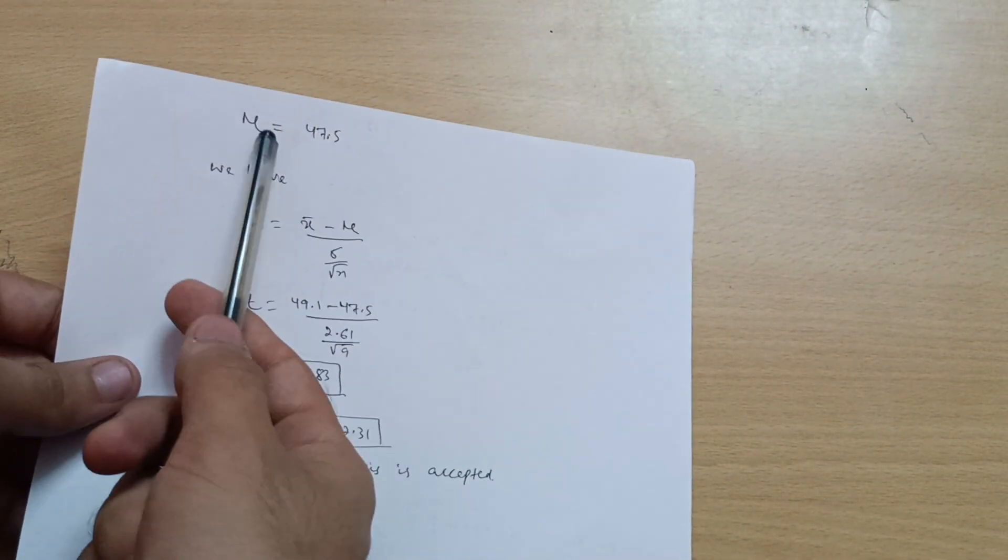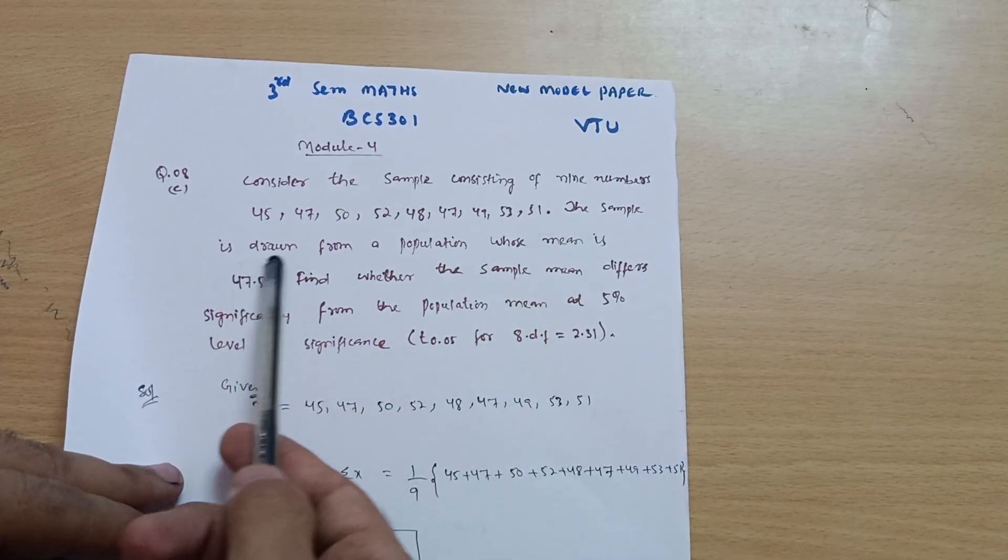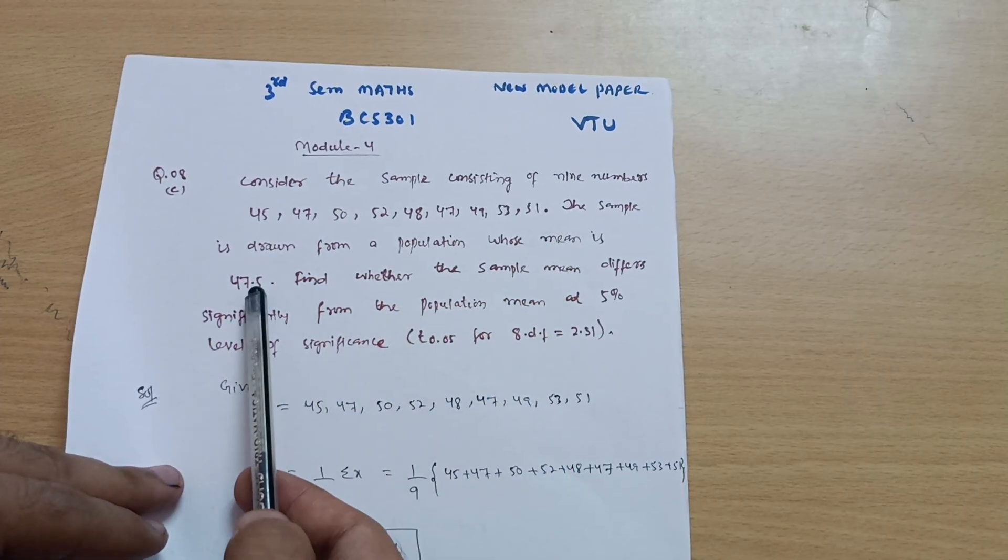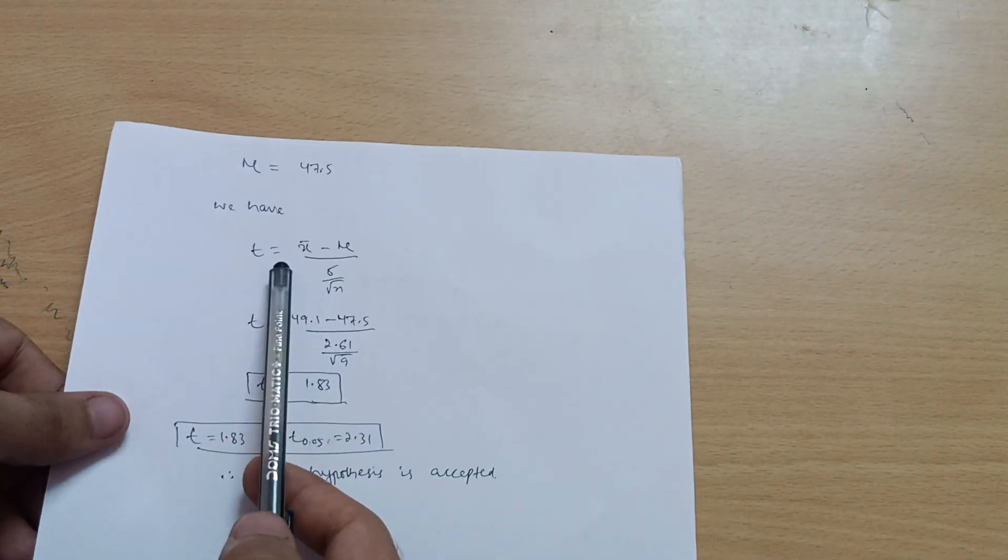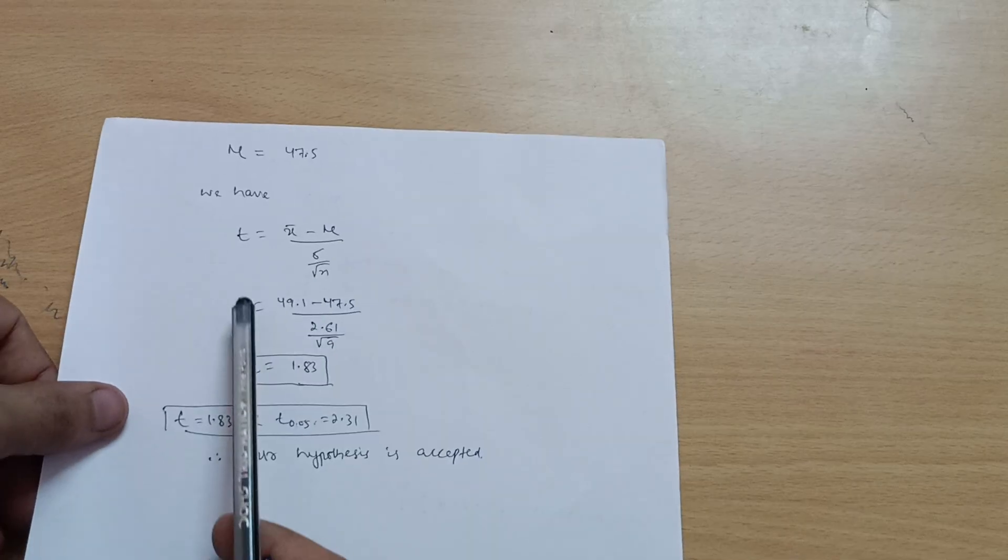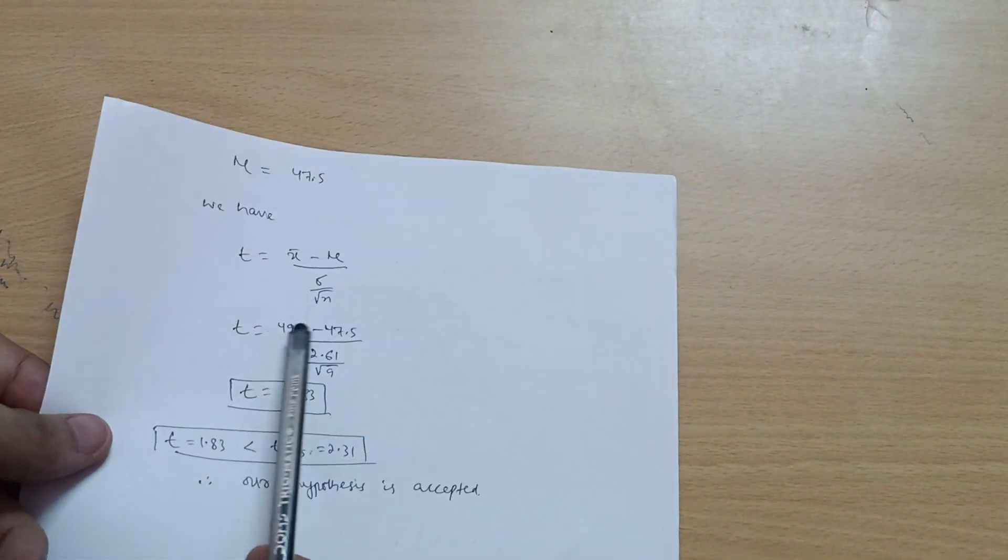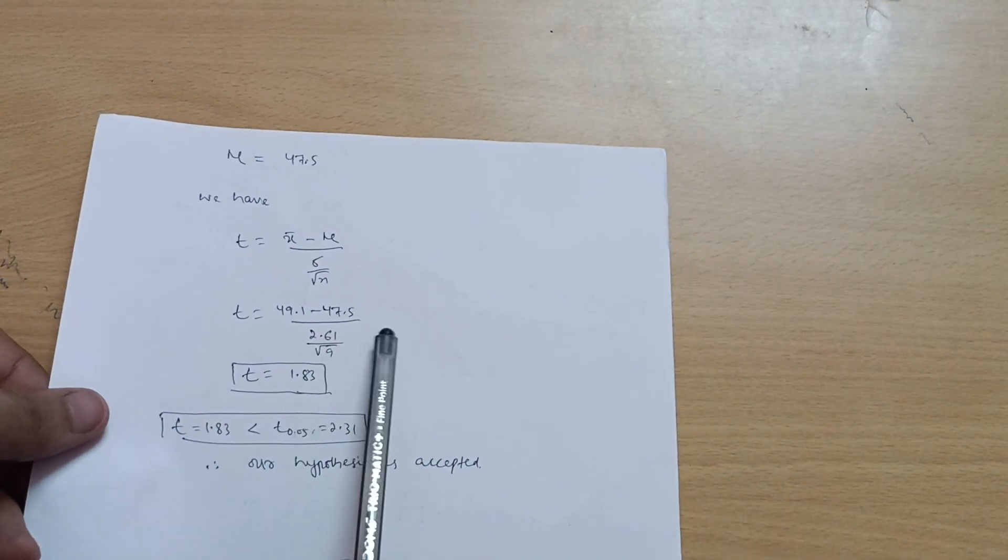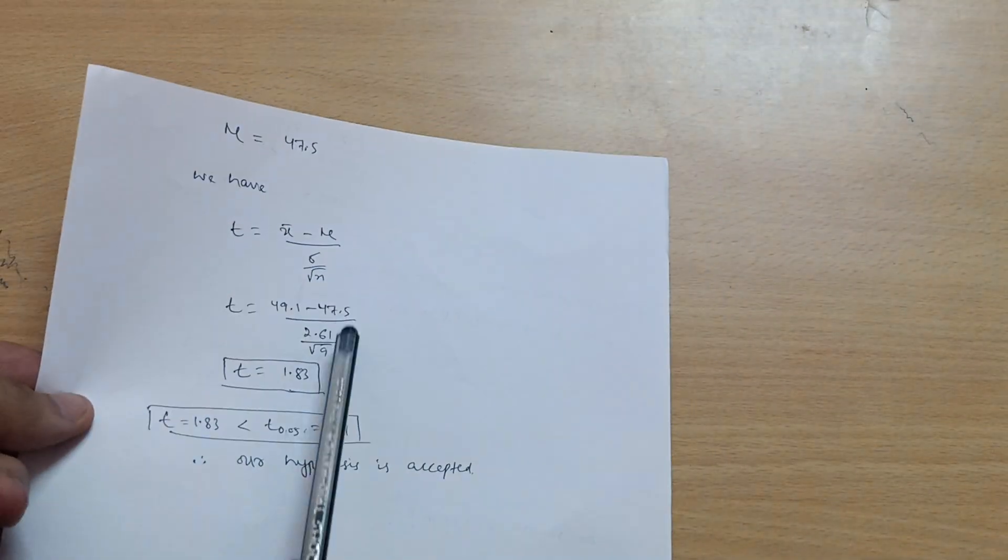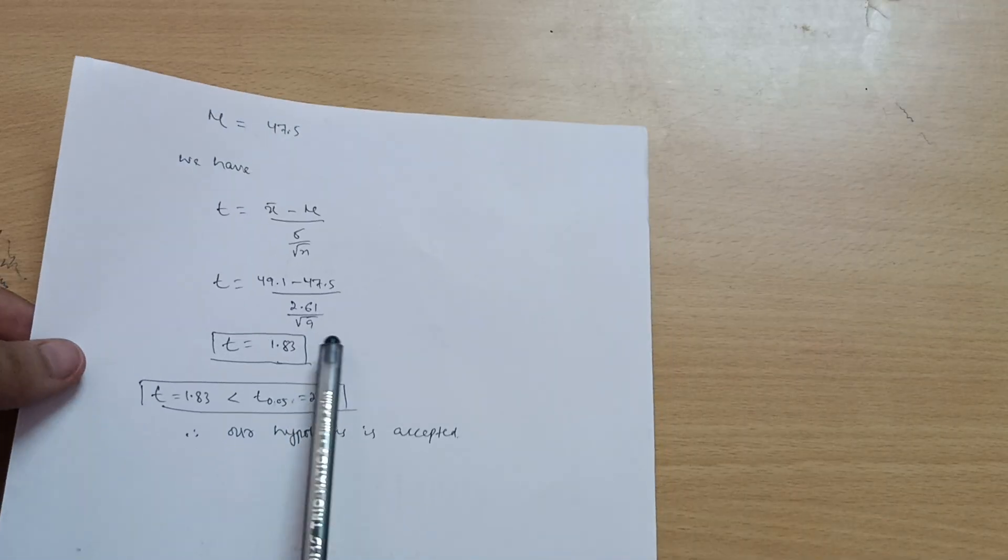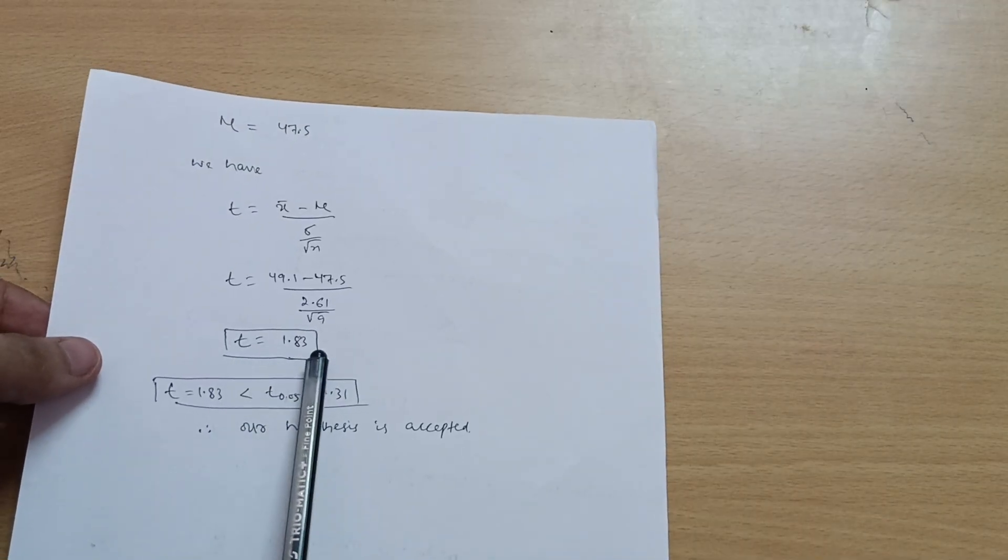Now we have the formula for the t distribution, and also mu is given in the problem, 47.5. See here, the sample is drawn from a population whose mean is 47.5, so mu I can take 47.5. We have the formula t is equal to X bar minus mu divided by sigma by root N. So X bar we have calculated, that is 49.1. So 49.1 minus 47.5 divided by sigma value we have calculated here, that is 2.61, 2.61 divided by root of N. N is the total number, that is 9. So t you will get 1.83.